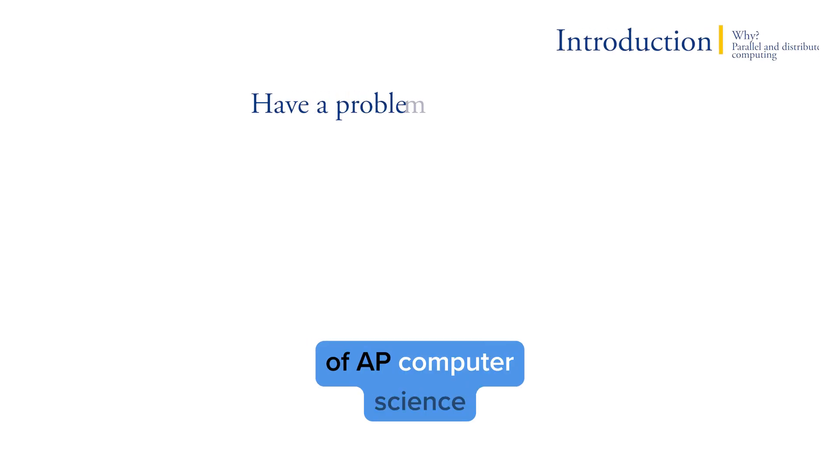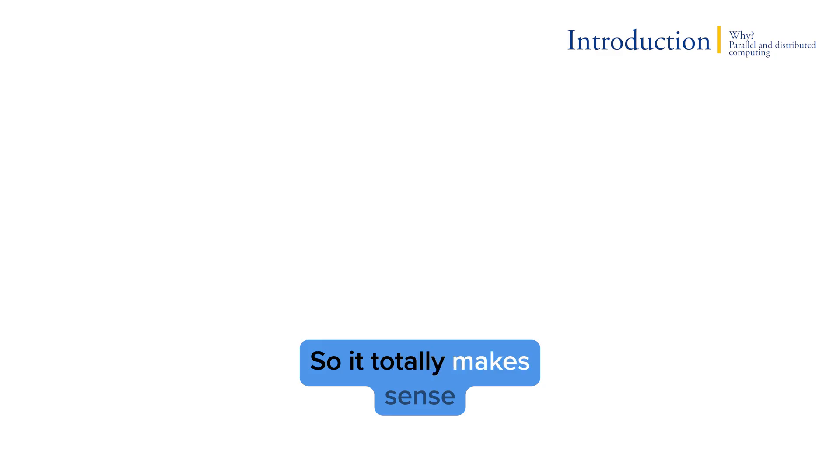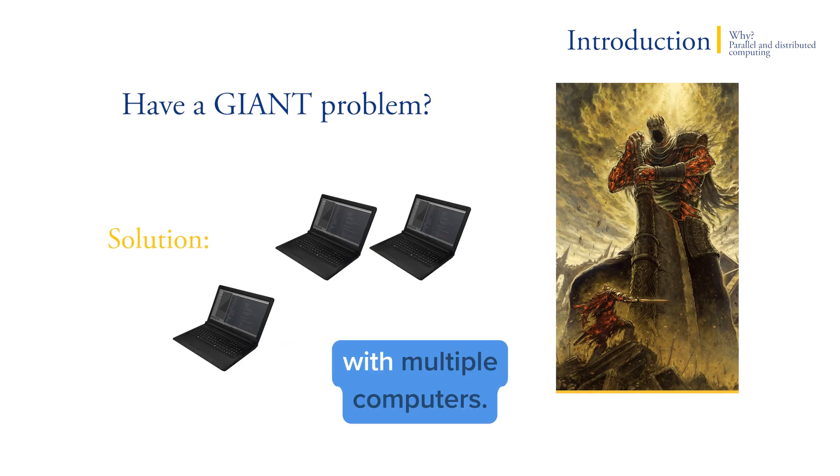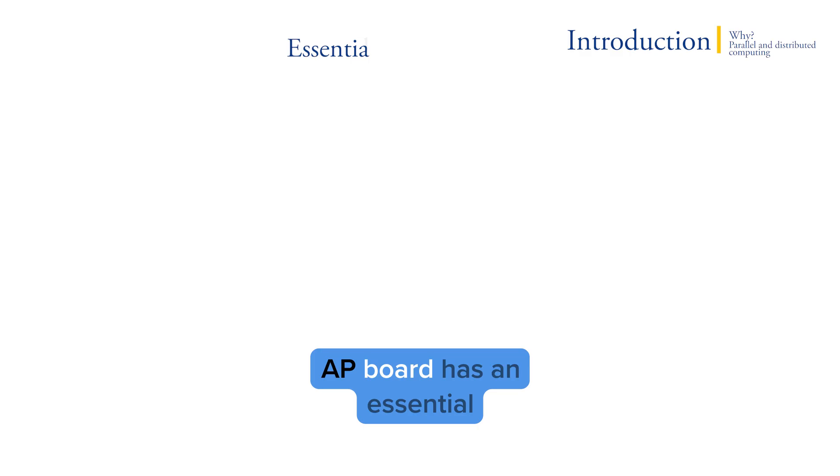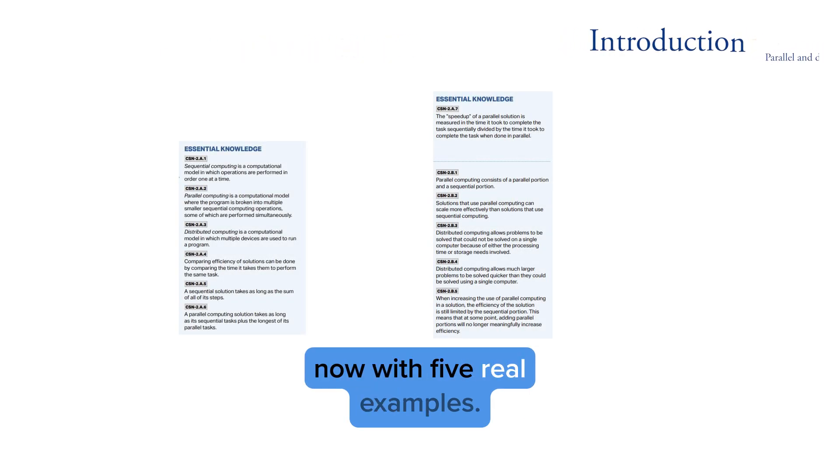The foundation of AP computer science principles is that when you have a problem, you solve it with a computer. So it totally makes sense that if you have a giant problem, you solve it with multiple computers. The AP board has some essential knowledge and definitions, and we'll go over those now with five real examples.